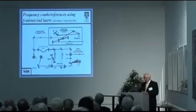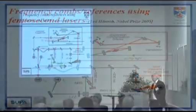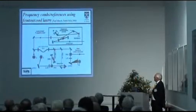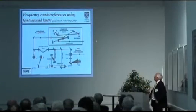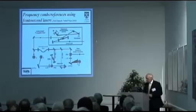If you have a continuous sequence of very short-duration pulses — delta functions in time — the Fourier transform or spectral picture of that is a comb. Ted Hänsch made very good use of these lasers and was rightfully awarded the Nobel Prize in Physics in 2005.